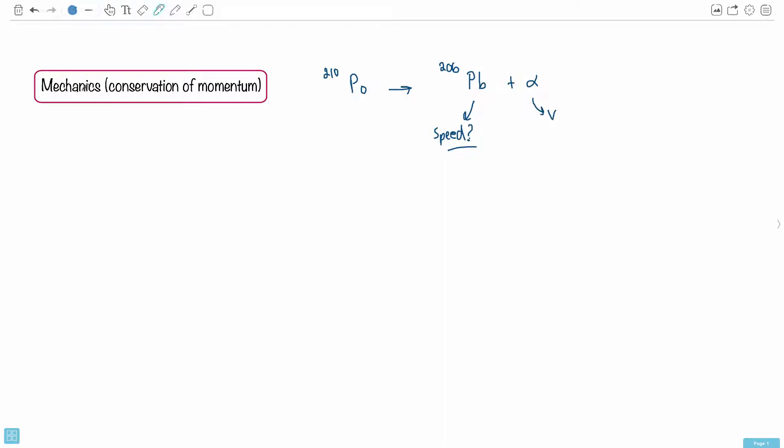This question is all about mechanics, and in particular it's going to use conservation of momentum. In this question we're told that we have a stationary nucleus of polonium-210, and it undergoes alpha decay, so we have some alpha particle and it forms lead-206.